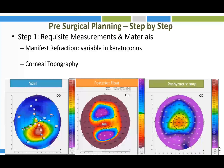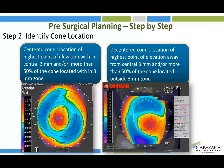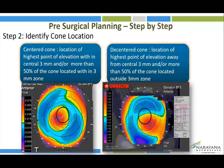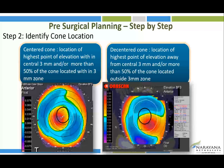Before planning INTACS, we need refraction and corneal topography. In keratoconus, subjective refraction has high variability, and if vision is less than 6/12 the refraction may be unreliable. Topography needed includes curvature map, posterior float map, and pachymetry map. The next step is identifying whether the cone is centered or decentered — if more than 50% of the cone is within the central 3 mm zone it is a centered cone; if more than 50% is beyond 3 mm it is decentered. Overly decentered cones should not receive INTACS due to perforation risk.